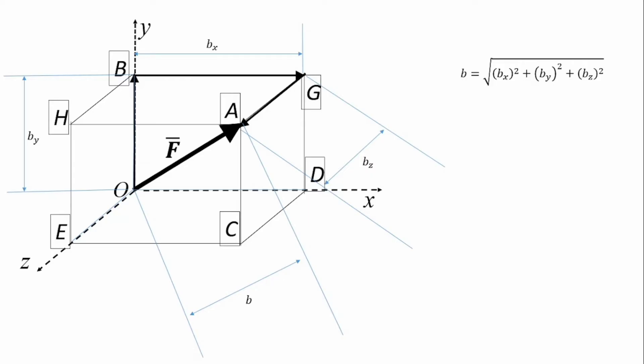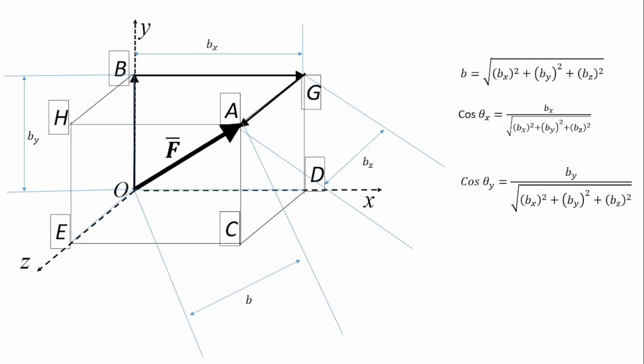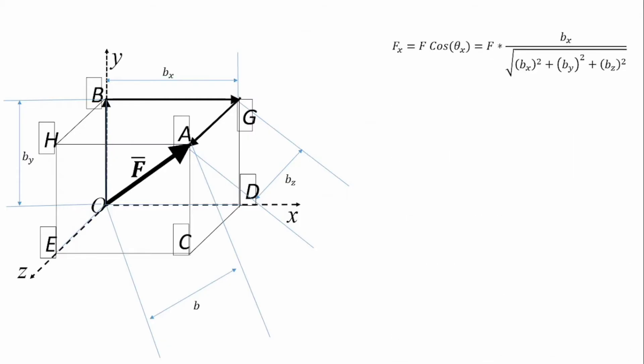If all these values are known, one can find b — the total distance the force has been transmitted from point zero to point A — by taking the square root of the sum of the squares of bx, by, and bz. Knowing every dimension, one can find the direction cosine for each axis: for the x axis, it's bx divided by b; for the y axis, by divided by b; and for the z axis, bz divided by b. The force components are then found by multiplying the force magnitude by each direction cosine.